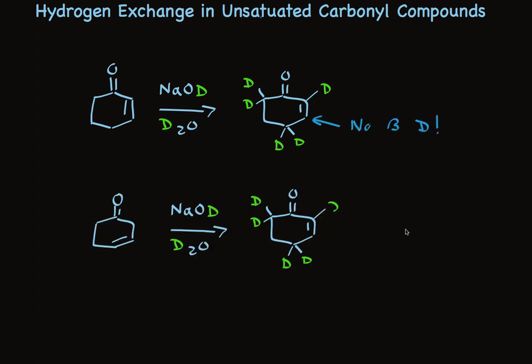And one last thing. Cyclic compounds do exactly the same kind of thing. Treatment of 2-cyclohexenone with deuterium labeled sodium hydroxide and D2O exchanges hydrogens at the alpha position on both sides of the carbonyl and at the gamma position. Again, there is no deuterium at the beta position. And if we start with the beta-gamma unsaturated cyclohexenone, again, we'll make the alpha-beta unsaturated product with the same substitution pattern we saw before.